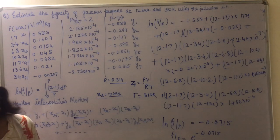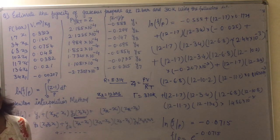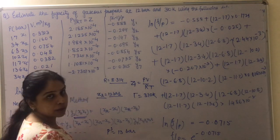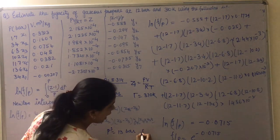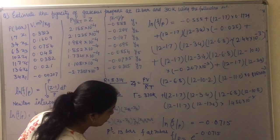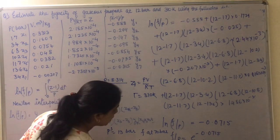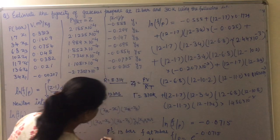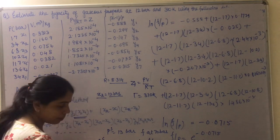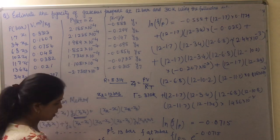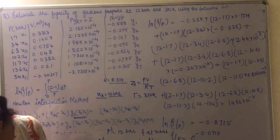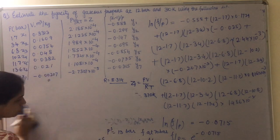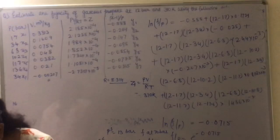The question also states that the vapor pressure of propane at 310 K is 13 bar. With the Newton interpolation method you can find the fugacity at 70 bar. Using that, you can find the fugacity coefficient φ = f/P. You have both values so you can compute φ. Then f_saturated = vapor pressure (13 bar) × φ, giving f_sat. We then use one more formula to compute the final fugacity.